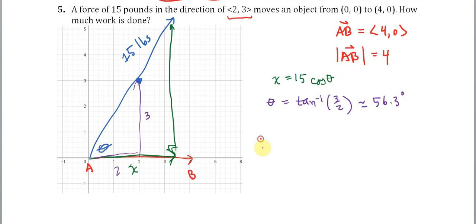So what this means is now I can calculate that this X component here is 15 cosine theta. That means the work done is the magnitude of the applied force, which is 15, multiplied by the displacement, which is 4, multiplied by the cosine of 56.3. This will give me an answer of approximately 33.282 foot-pounds.